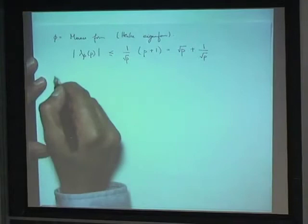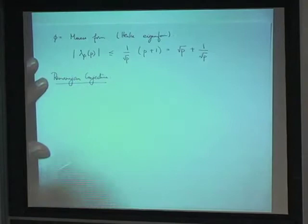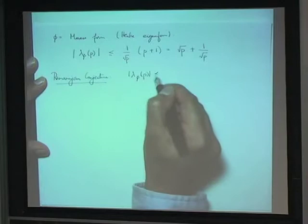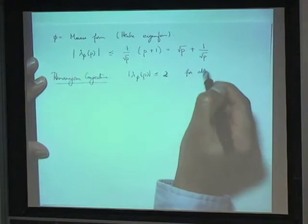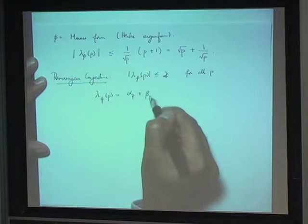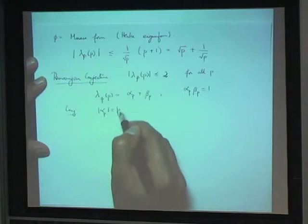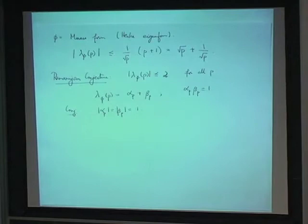Much more is expected to be true. These are the Ramanujan conjectures, which say that lambda_phi(p) is less than 2 for all primes p. One way to write it: the eigenvalues can be written as alpha_p plus beta_p, where alpha_p times beta_p equals 1. The conjecture is that both alpha_p and beta_p are of size 1. The trivial bound says alpha_p and beta_p are both smaller than square root of p, but really you want them to be of size 1.